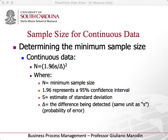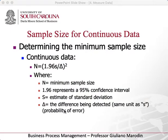So 1.96 is the confidence interval, times S which is the standard deviation, divided by the difference or the error — the probability of error. Remember that they have to be in the same unit. For example, if you're measuring in minutes or seconds how long it takes to produce a hamburger, let's say the mean is about 30 seconds and we're okay to have an error of one second — one second more or one second less. If we collect and it's 29 but actually it's 30, we're good with that. That is the error here, the probability or the difference. And all of that is squared. N is the sample size.